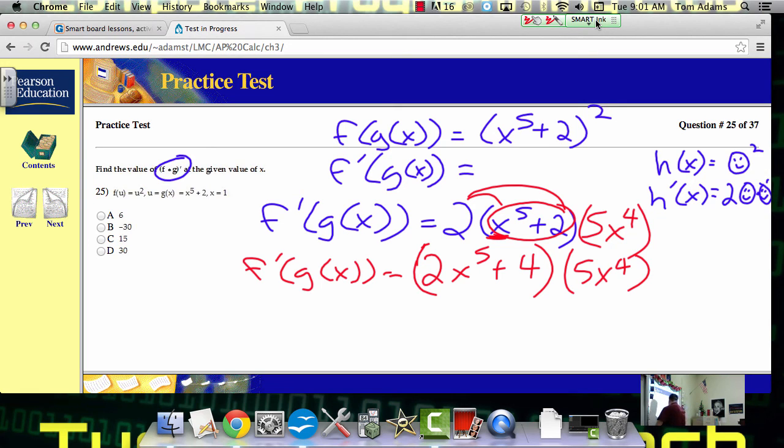And then that has to be multiplied by 5x to the fourth. And then I just went ahead and wrote it out. And so now when I push the 5x to the fourth through, I get 10x to the ninth plus 20x to the fourth. Double check that though. I was bragging about how good I could do it in my head. That's what I got, so it must be. So that's right.